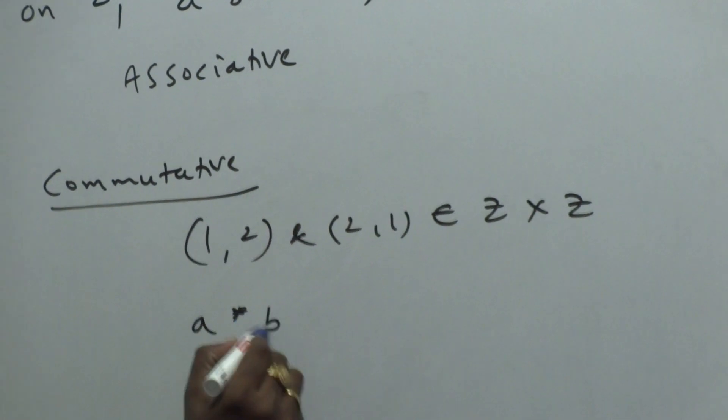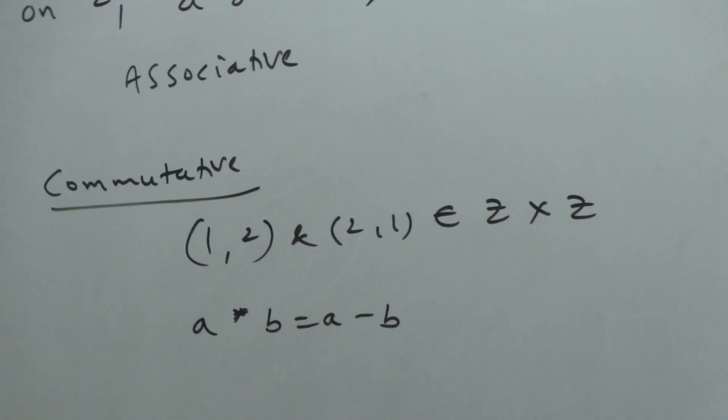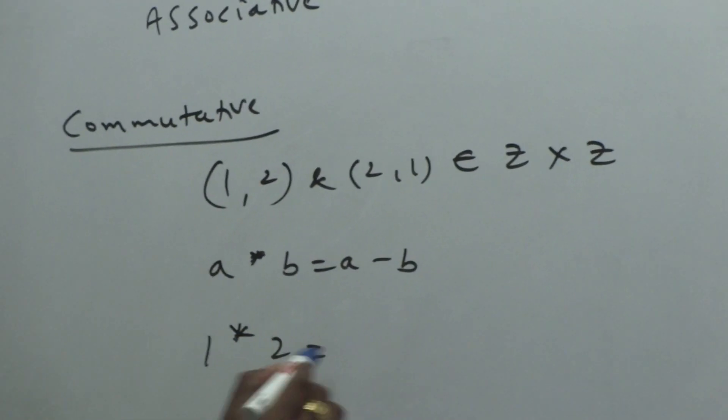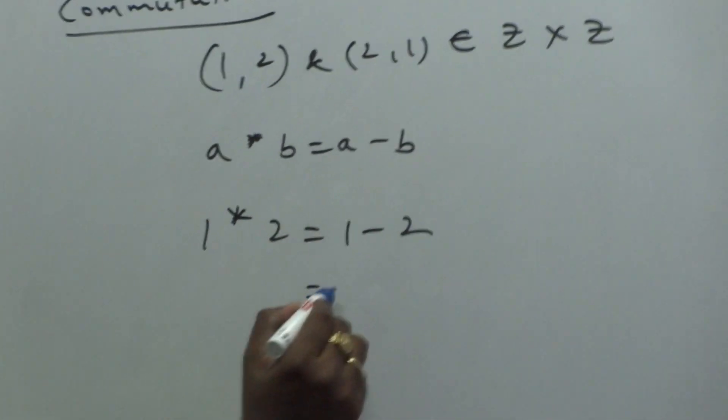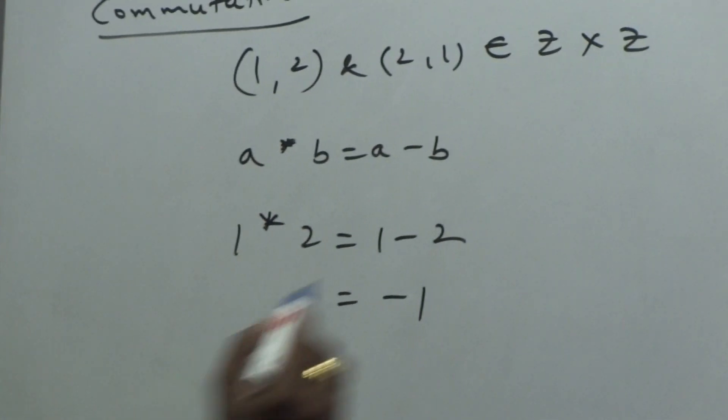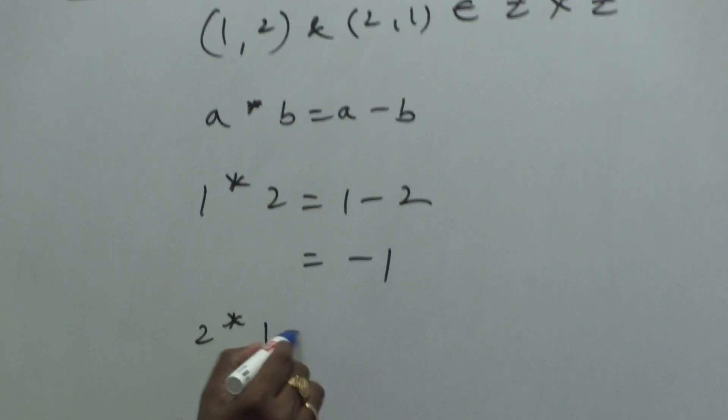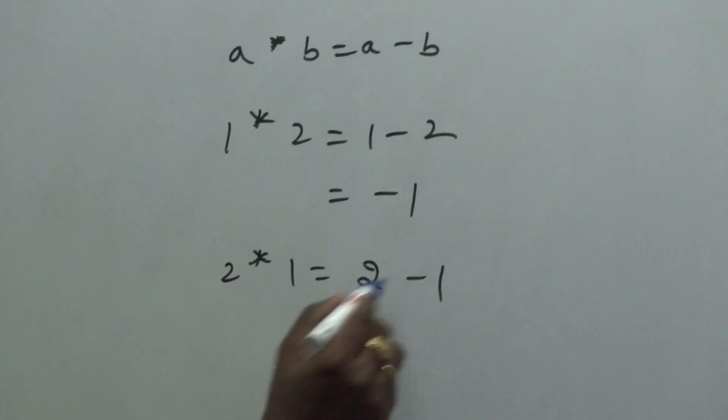A star B is given as A minus B. 1 star 2 equals 1 minus 2. What is 1 minus 2 value? Minus 1. 2 star 1 equals 2 minus 1. What is 2 minus 1 value? 1.